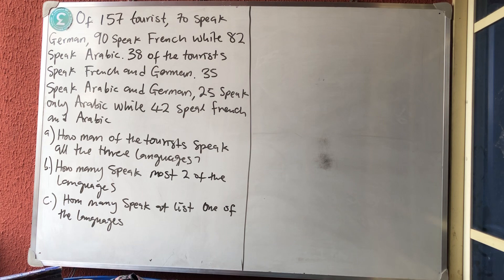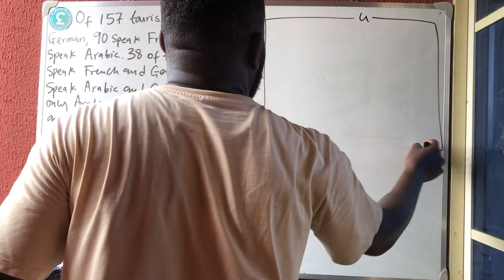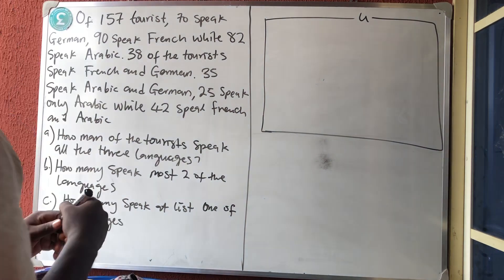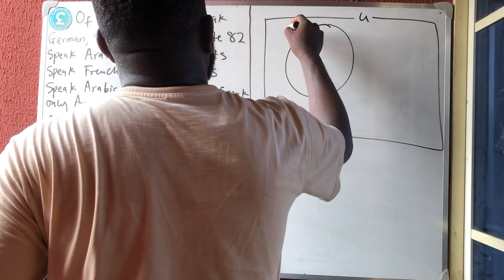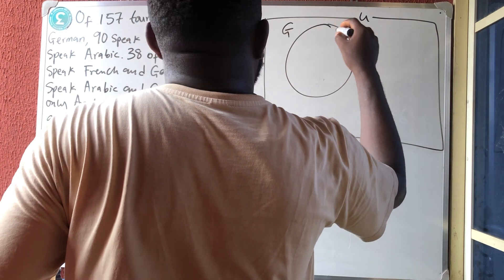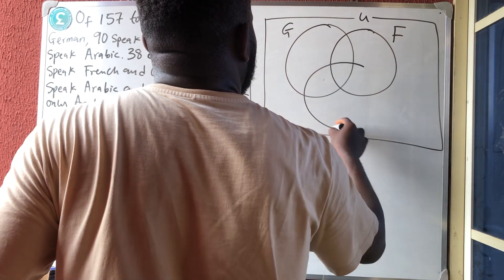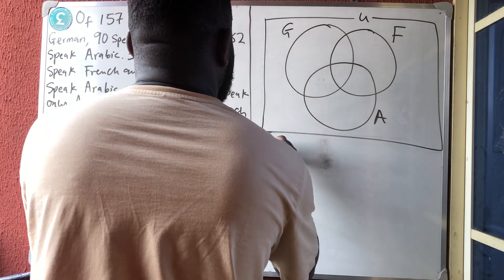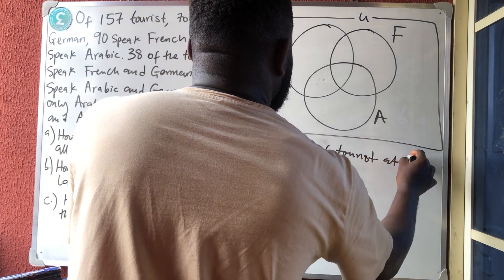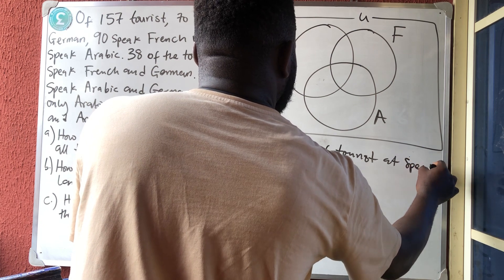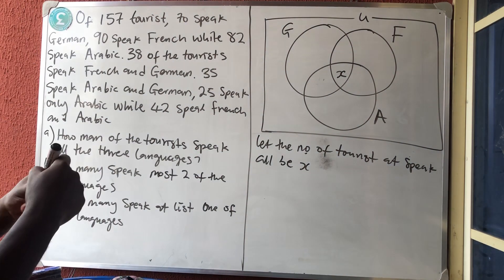The first question asks how many tourists speak all three languages, so that's where we start. We draw three overlapping circles — the first one for German, the second for French, and the third for Arabic. Let the number of tourists that speak all three languages be x. We place x at the center where all three overlap.